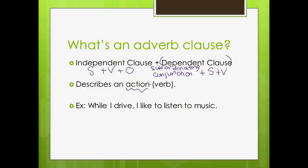Taking a look at our example here, we have 'I like to listen to music,' which is our independent clause. I have a subject, a verb, and object. In our dependent clause, here is our subordinating conjunction — 'while' — our subject and our verb. So the relationship between our verbs 'drive' and 'like' is time.